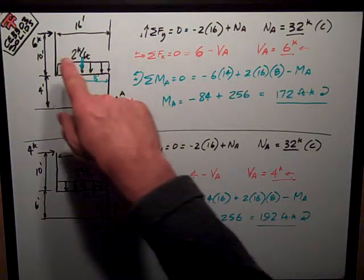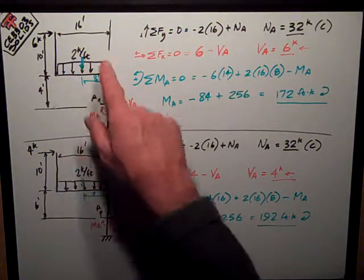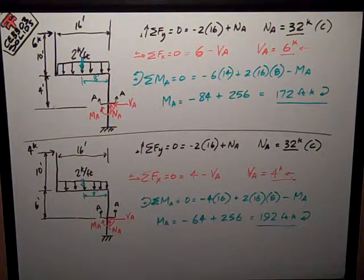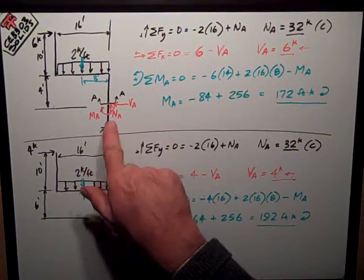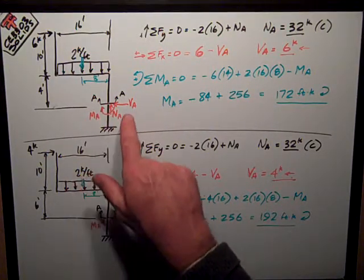Here's my loads for one situation, six kips, two kips per foot. The dimensions are as shown. First thing I want to know is, what is the normal force at section AA? So I've cut a section there, I've put my internal forces on it.